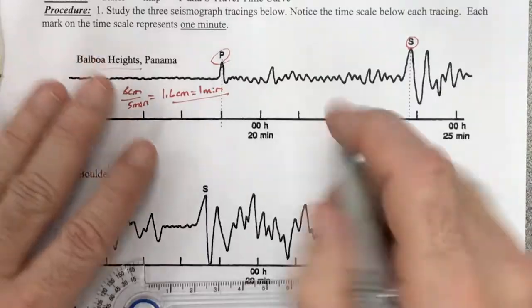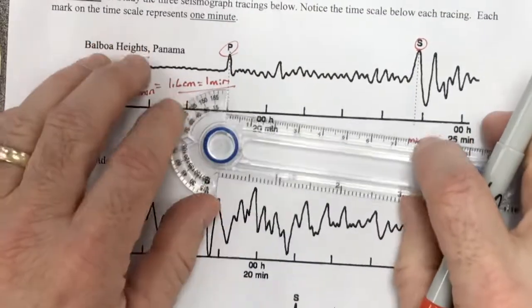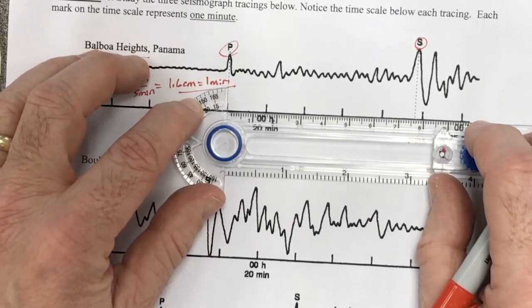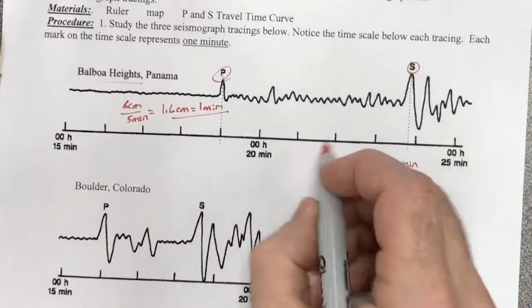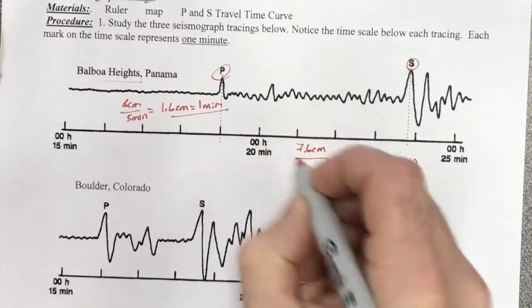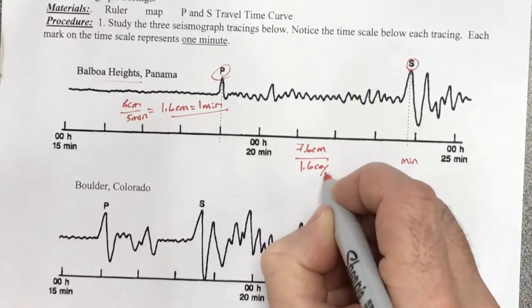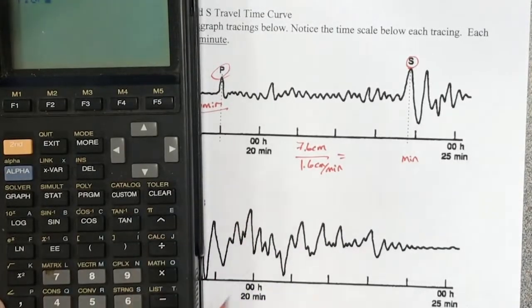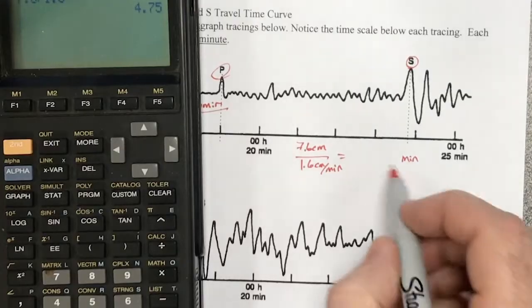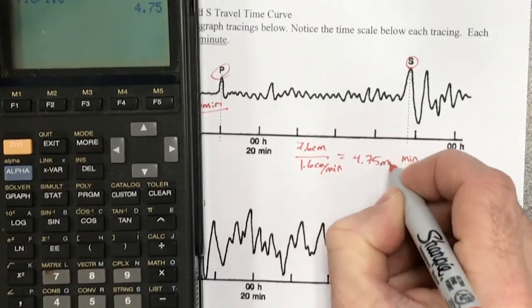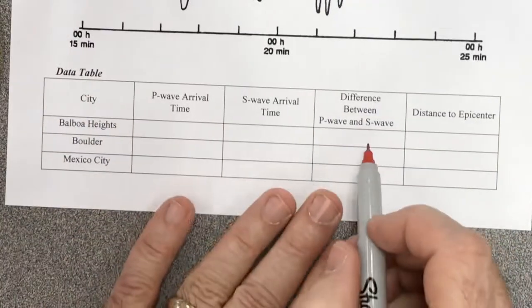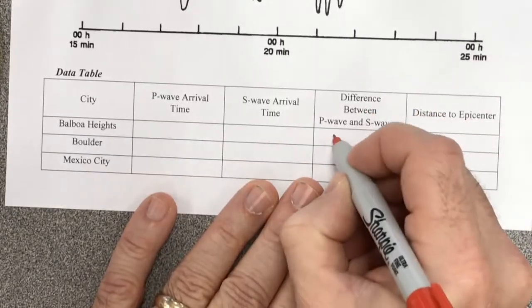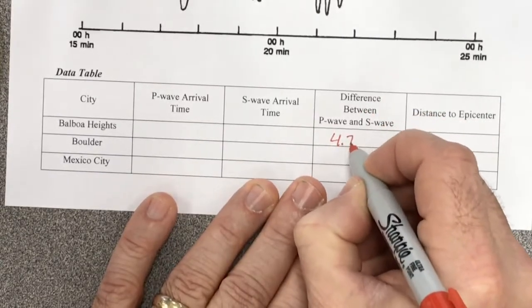So now what I want to do is measure the distance from the P to the S wave. We've got this nice dashed line, at least on the first one. I'm going to measure this, and I see that I'm at 7.6 centimeters. So 7.6 centimeters divided by 1.6 centimeters per minute. The centimeters cancel, and I get minutes. So 7.6 divided by 1.6 gives me 4.75 minutes. Now I want to put that on a table. I'm going to put this number here, the difference between the P and S wave, is 4.75 minutes.